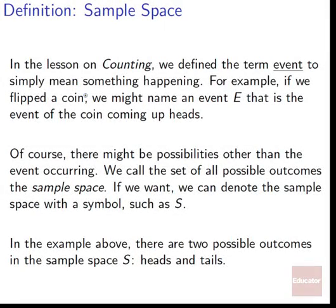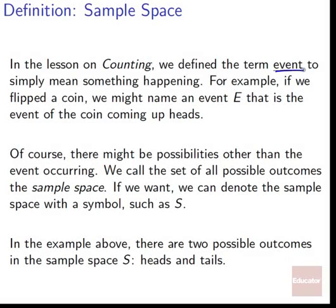The first thing we want to define is the idea of a sample space. In the lesson on counting, we defined the term 'event' to simply mean something happening. For example, if we flipped a coin, we might name an event E that is the event of the coin coming up heads. There might be possibilities other than the event occurring — it might come up something other than heads. We call the set of all possible outcomes the sample space.